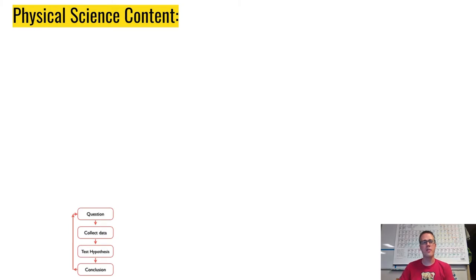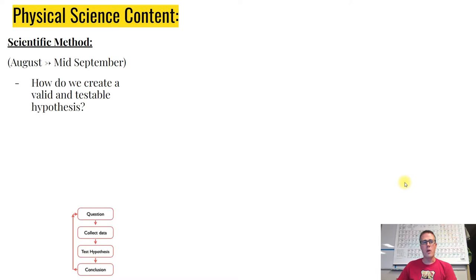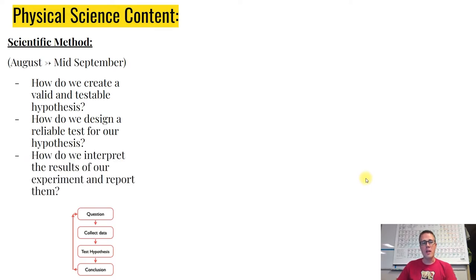We cover physics, chemistry, and the scientific process in this class. In the beginning, we'll go over the scientific method until about mid-September, where we'll talk about hypotheses, procedures, experimental design, and how to interpret data—basically things that go into any good experiment. This will be a warm-up for a new club we're offering this year that I hope you'll consider.